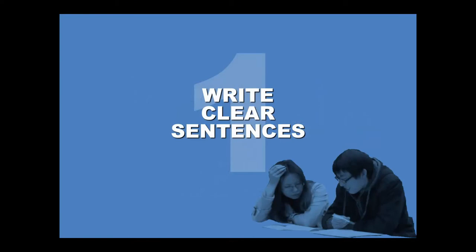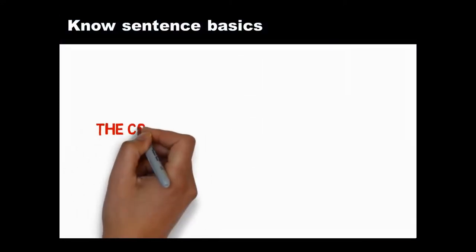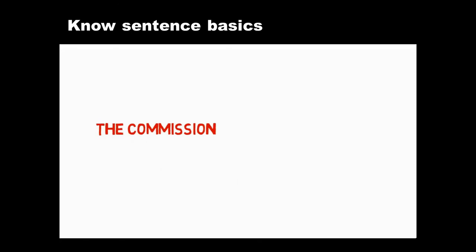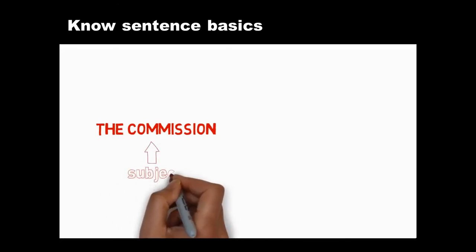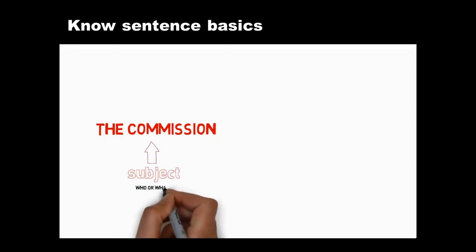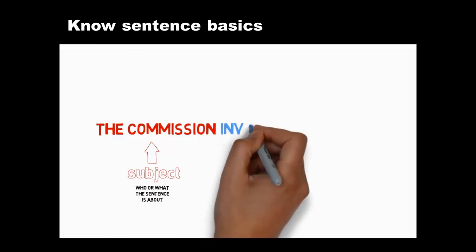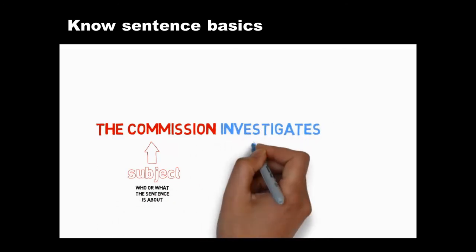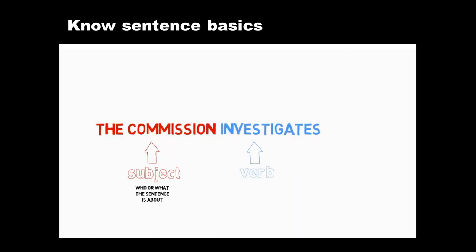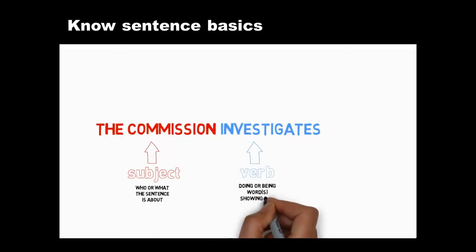We'll start with the basics of clear simple sentences, then look at how to vary what we write. To write a clear sentence, first indicate the subject early on — the subject tells readers who or what the sentence is about. Second, follow this subject swiftly with a complete verb. Verbs are doing or being words. Complete verbs show past, future, or present time by changing their form.